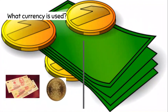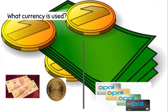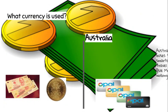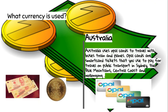What currency is used? Australia uses Opal cards to travel with buses, trains, and planes. Opal cards are smart card tickets that you use to pay for travel on public transport in Sydney, the Blue Mountains, Central Coast, and Wollongong.